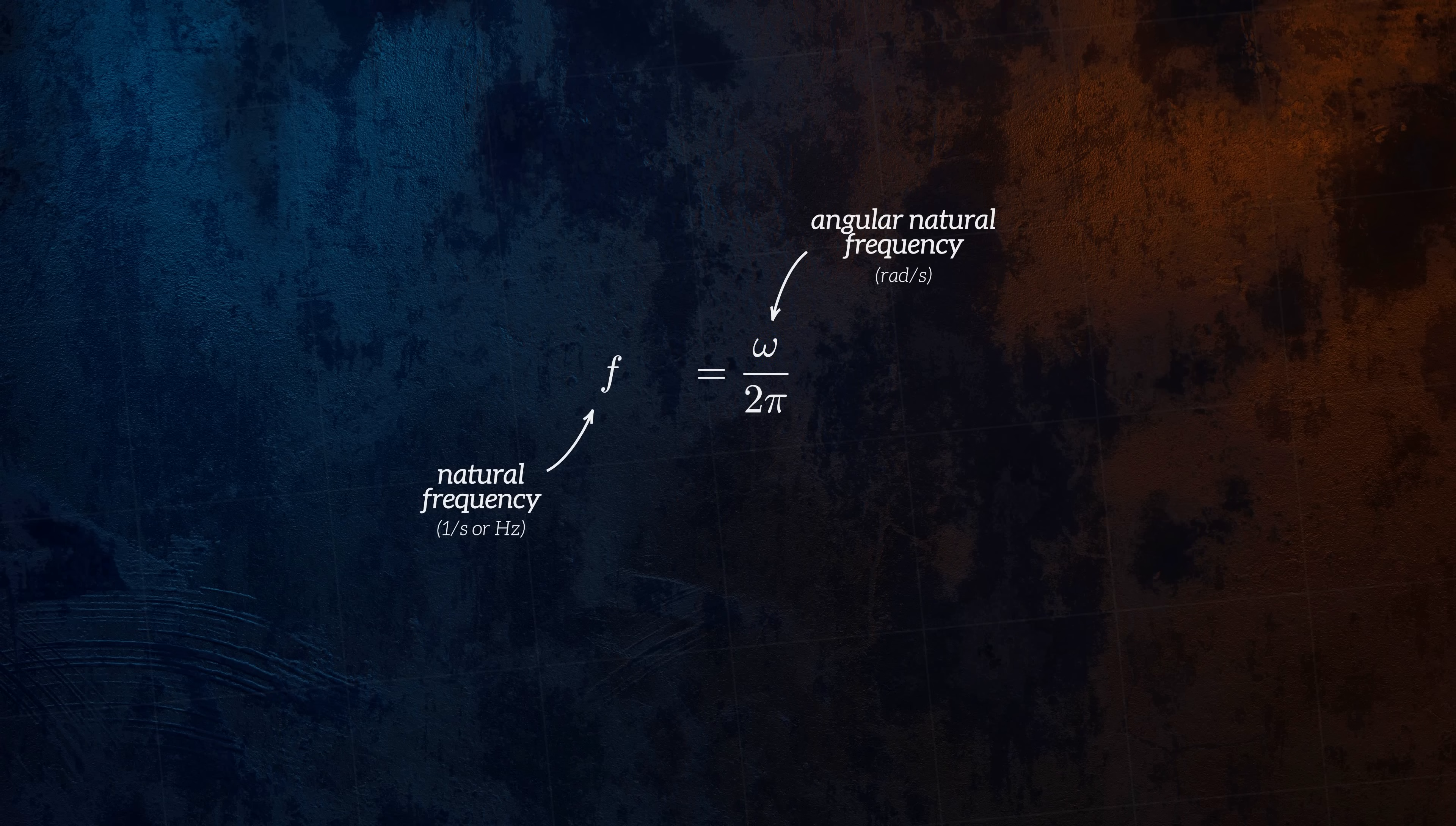The inverse of the natural frequency is the period T, which is the duration of each cycle in seconds.